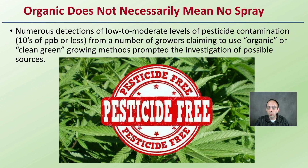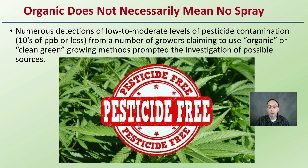A lot of people go to 'organically grown,' but organic does not necessarily mean no spray. Numerous detections of low to moderate levels of pesticide contamination — tens of parts per billion or less — from growers claiming to use organic or clean green growing methods prompted investigation of possible sources. Organic does not mean pesticide-free. Organic typically means there is a smaller list of products that can be applied and still qualify the plant material as organic.